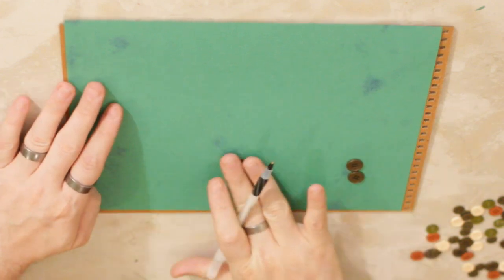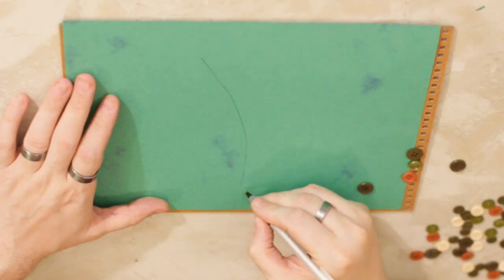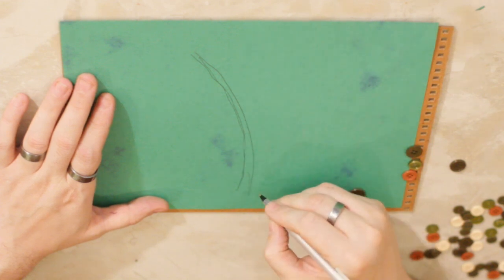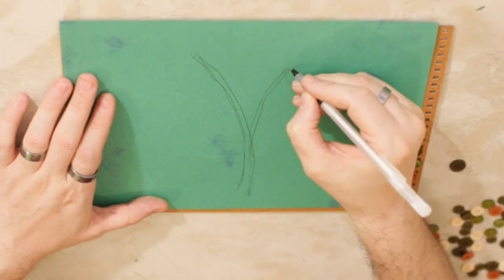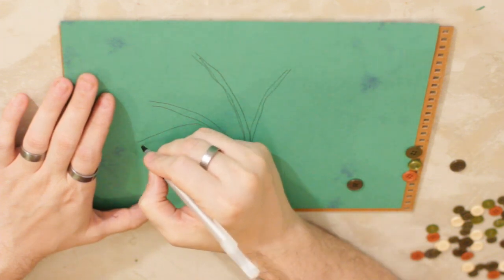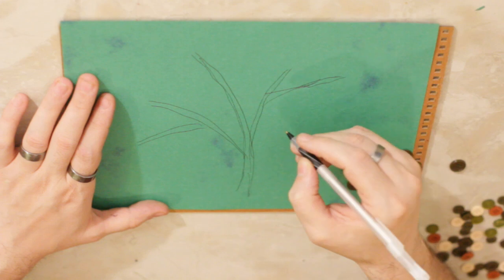So you have these long sort of stalks that come out of the ground and they branch off a little bit, right? So they branch off and a little bit more they branch off. Here's another branch, there are branches everywhere.